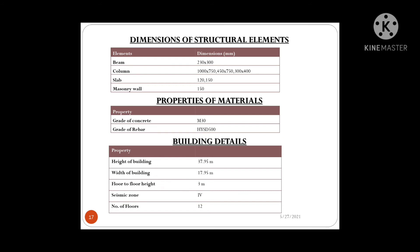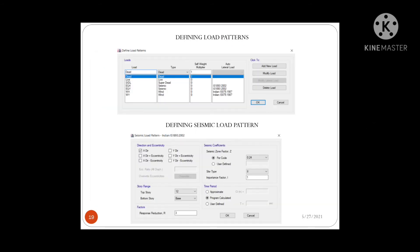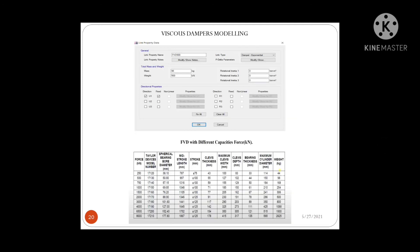We have designed this building for seismic zone 4. The loads applied to the structure include dead load, live load, SIDL, earthquake loads and wind loads taken in X and Y directions. Earthquake loads are taken as per IS 1893-2002 and wind loads as per IS 875-1987. The seismic zone factor is 0.24 as per IS code. The site type is considered type 2 for medium stiff soil. The importance factor is 1 for a residential building with less than 200 occupants, and the response reduction factor is 2.